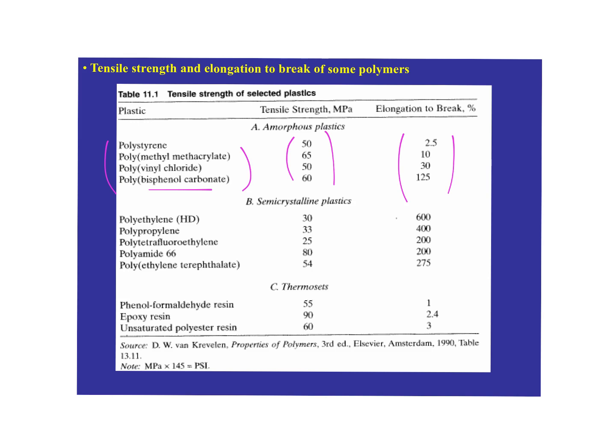Looking at tensile strength of various plastics: polystyrene, PMMA, PVC, and polybisphenyl carbonate have tensile strengths from 50 to 65 MPa. There's no hydrogen bonding in polystyrene; PMMA has hydrogen bonding due to oxygen, responsible for both its higher strength and lower elongation to break. PVC has a lot of hydrogen bonding, responsible for its tensile strength and lower extension to break. Polybisphenyl carbonate has both oxygen and bulk, making it a relatively strong plastic with decent elongation to break.